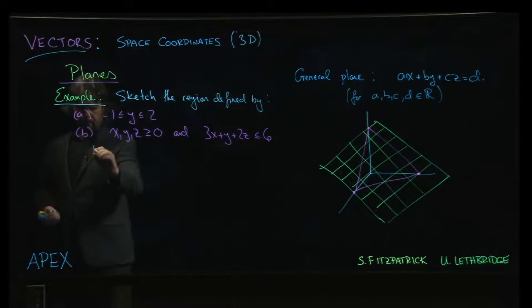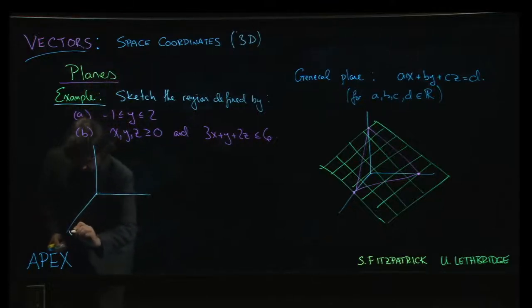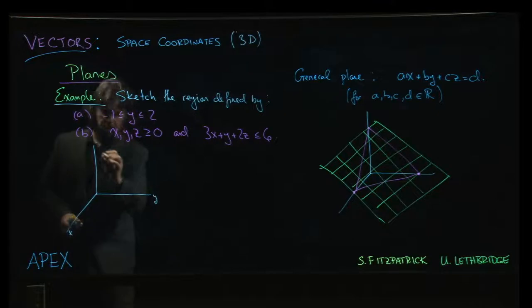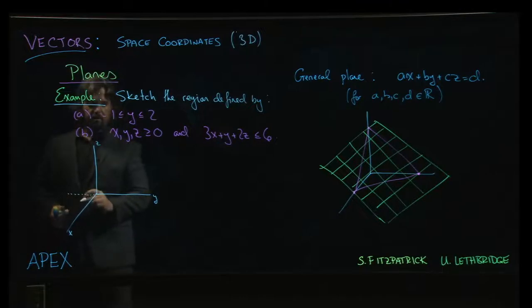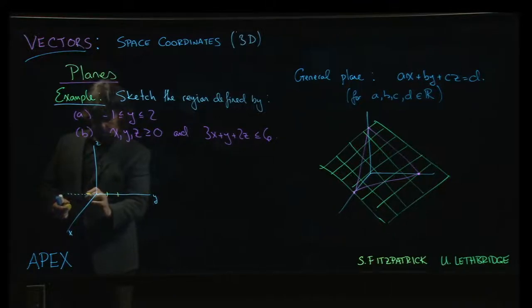So in the first one, we'll draw our coordinate axes, we'll label them x, y, z as usual and extend out the negative y axis here because we want to mark y equals 2 and y equals negative 1.